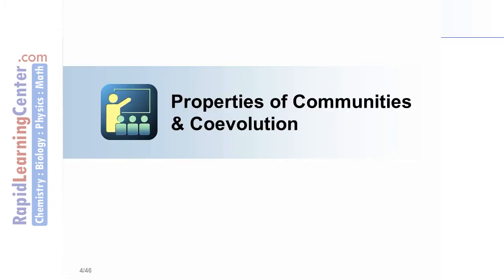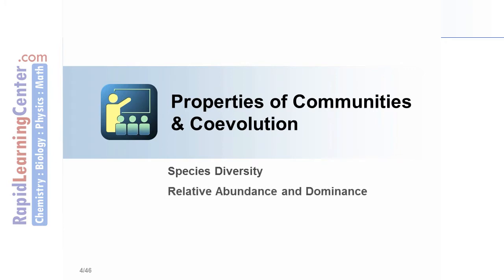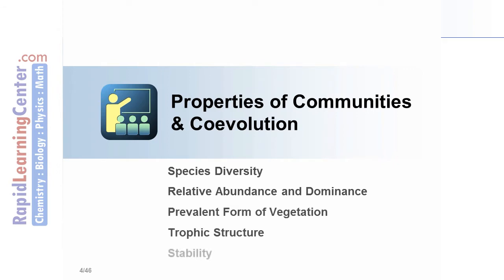In this segment of the tutorial we'll talk about properties of communities and co-evolution, including species diversity, relative abundance and dominance, prevalent forms of vegetation, trophic structure, stability, and co-evolution.